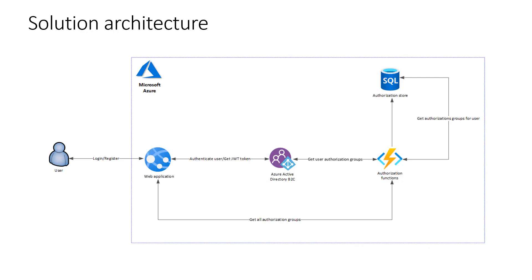This is the solution architecture I would like to describe, and this is something we will also go through using the source code. There is a simple web application and a user who would like to sign in. This web application is secured by Azure Active Directory B2C, so all users will have to sign in first to access its functionalities. Without an authorization mechanism, every user can access all functionalities of the web application.